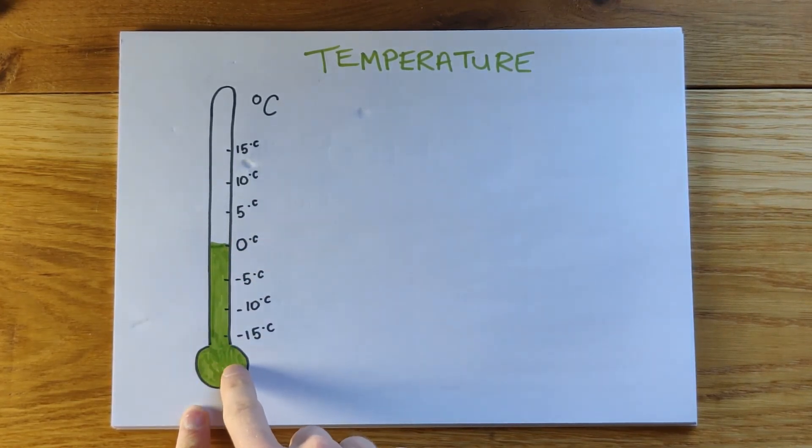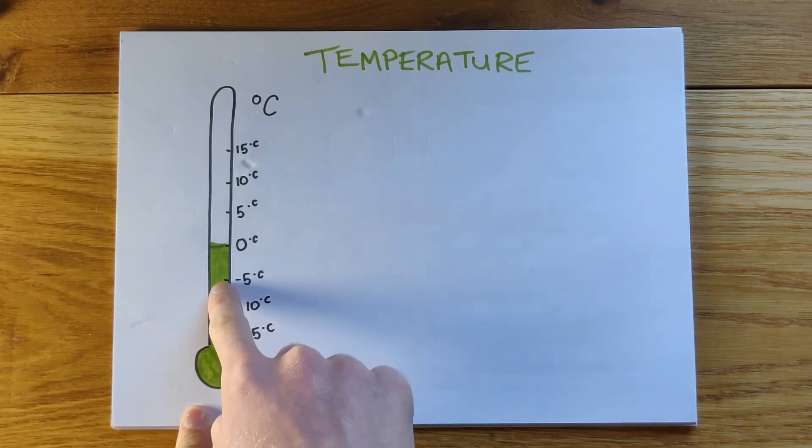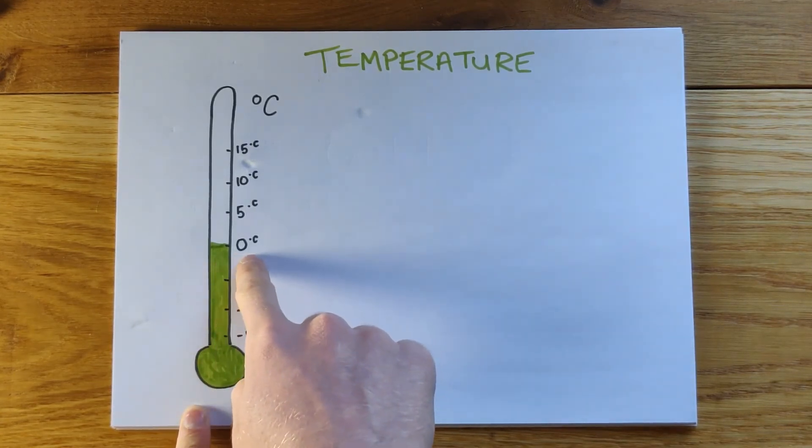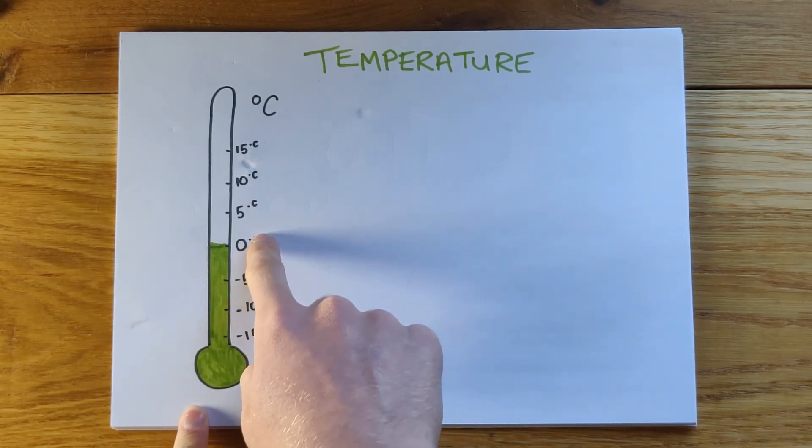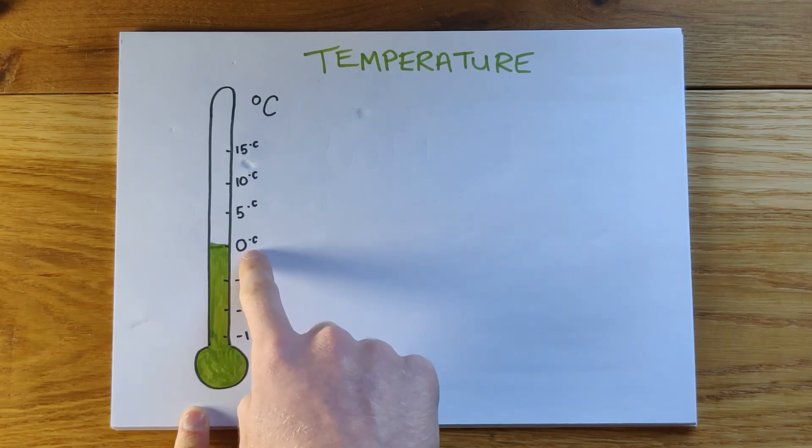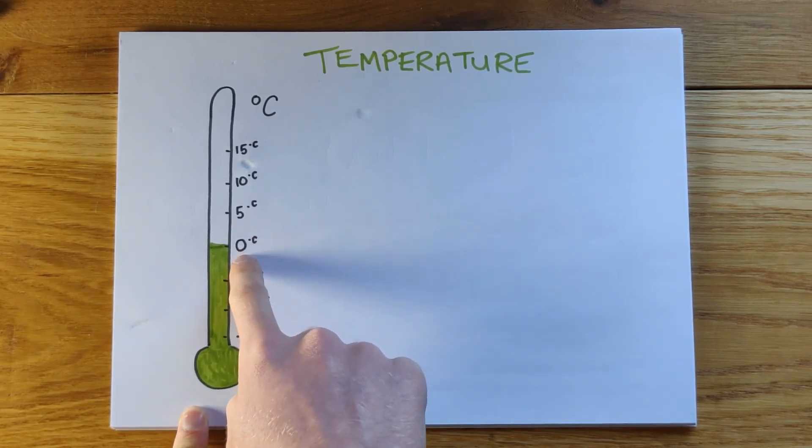As you can see at the minute, the green part of the thermometer is going up to zero degrees Celsius. Zero degrees Celsius as a temperature is important because that is the temperature, as we learned in our science lessons, that water freezes at.